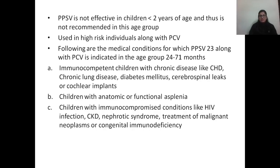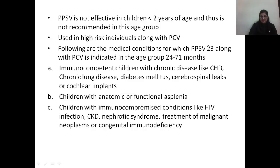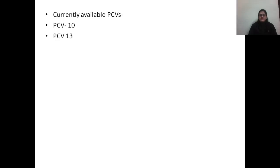Other indications include diabetes mellitus, cerebrospinal fluid leaks or cochlear implants, children with anatomic or functional asplenia, and immunocompromised conditions like HIV, chronic kidney disease, nephrotic syndrome, children treated for malignant neoplasms, or those with congenital immunodeficiency. The polysaccharide vaccine is used along with the conjugate vaccine in these groups. The currently available conjugate vaccines are PCV10 and PCV13, where the numbers represent the number of serotypes against which the vaccine provides protection.